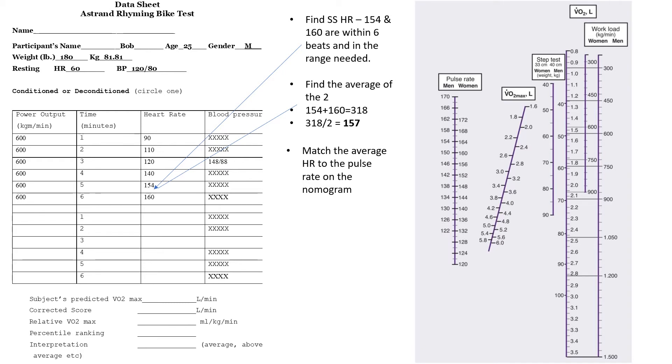So you'll come over to the nomogram over here, you'll find the pulse rate. In this example, it's male, so we're going to plot 157. We're going to plot 157, as you'll see right there by that red dot, it would be about right there.